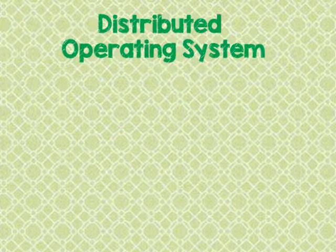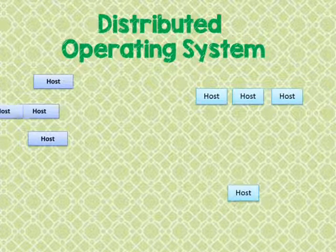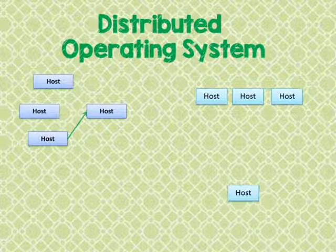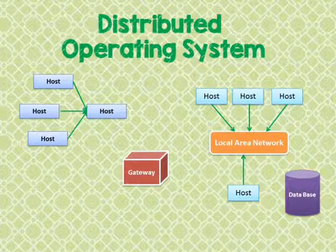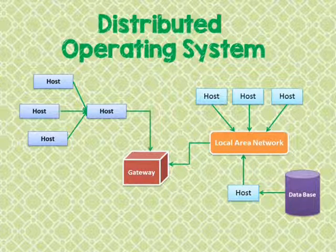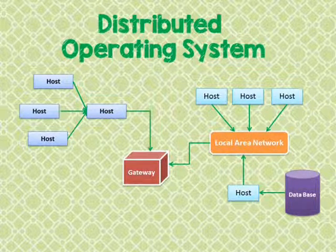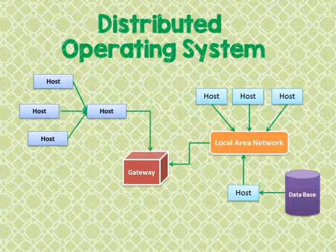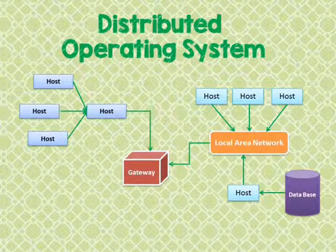Distributed Operating Systems use multiple central processors to serve multiple real-time applications and multiple users. Data processing jobs are distributed among the processors according to which one can perform each job most efficiently. The processors communicate with one another through various communication lines such as high-speed buses or telephone lines. These are referred to as loosely coupled systems or distributed systems. Processors in a distributed system may vary in size and function, and are referred to as sites, nodes, computers, and so on.